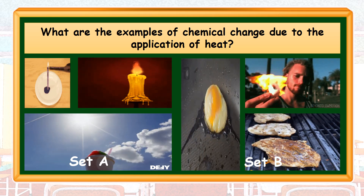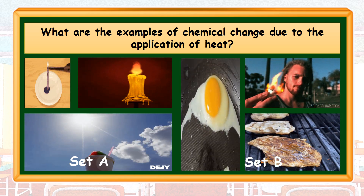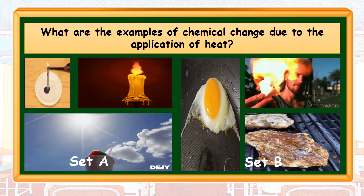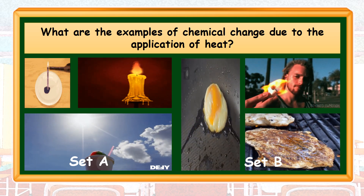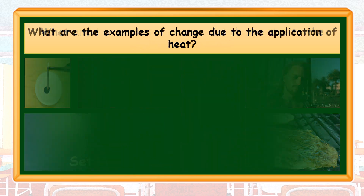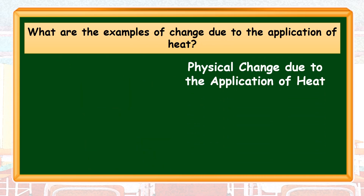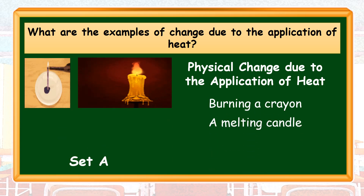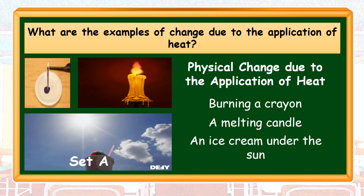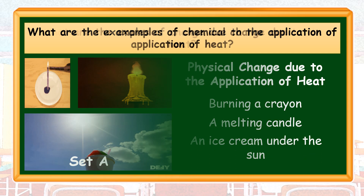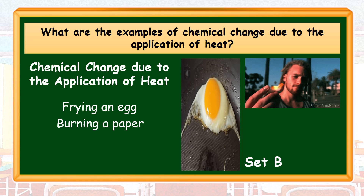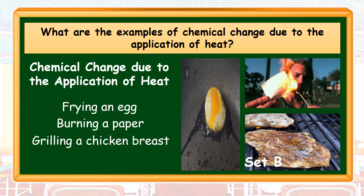Let's try to observe these sets of illustrations. Physical change due to the application of heat includes: burning a crayon, a melting candle, and an ice cream under the sun. Chemical change due to the application of heat includes: frying an egg, burning a paper, and grilling a chicken breast.